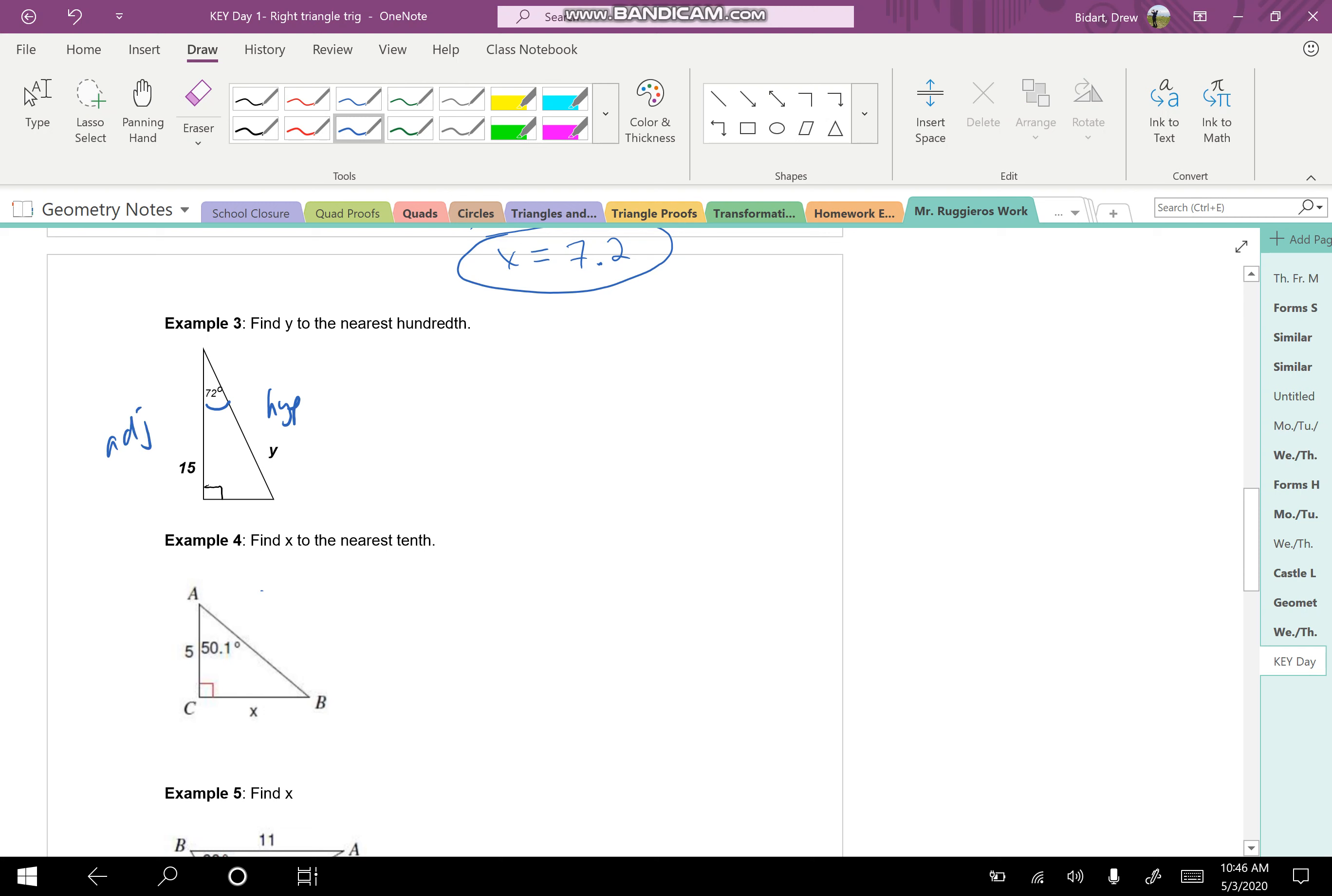All right, so if you remember SOHCAHTOA, we know that adjacent and hypotenuse has to correspond to the cosine function. So the way we write is that the cosine of 72 is equal to the adjacent over the hypotenuse.